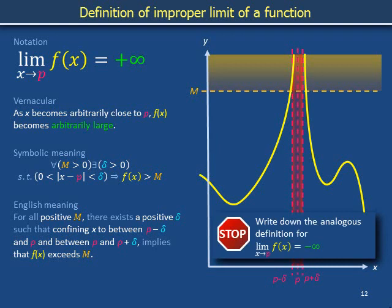Write down the analogous vernacular, symbolic, and unpacked English definitions for the notation that reads: the limit as x approaches p of f of x is negative infinity.